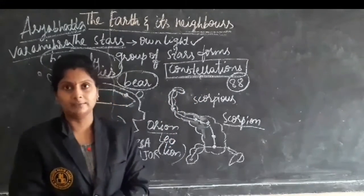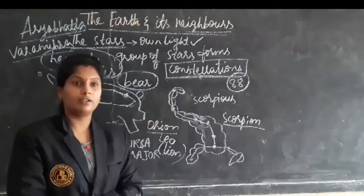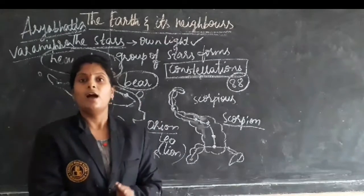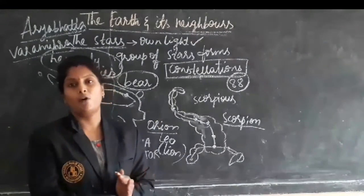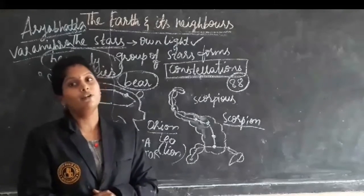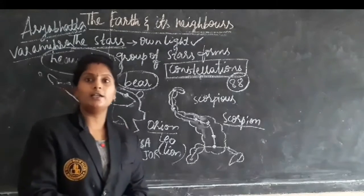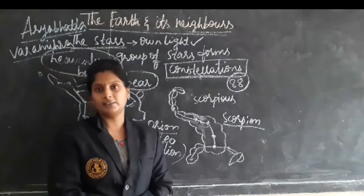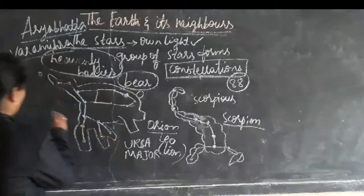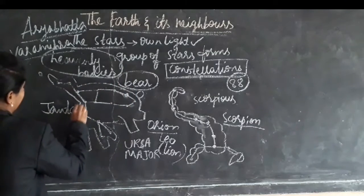There is a planetarium where you can see all these stars, moons, sun, and how they are revolving and rotating. If you want, just Google it — Jantar Mantar — and there you can see it.